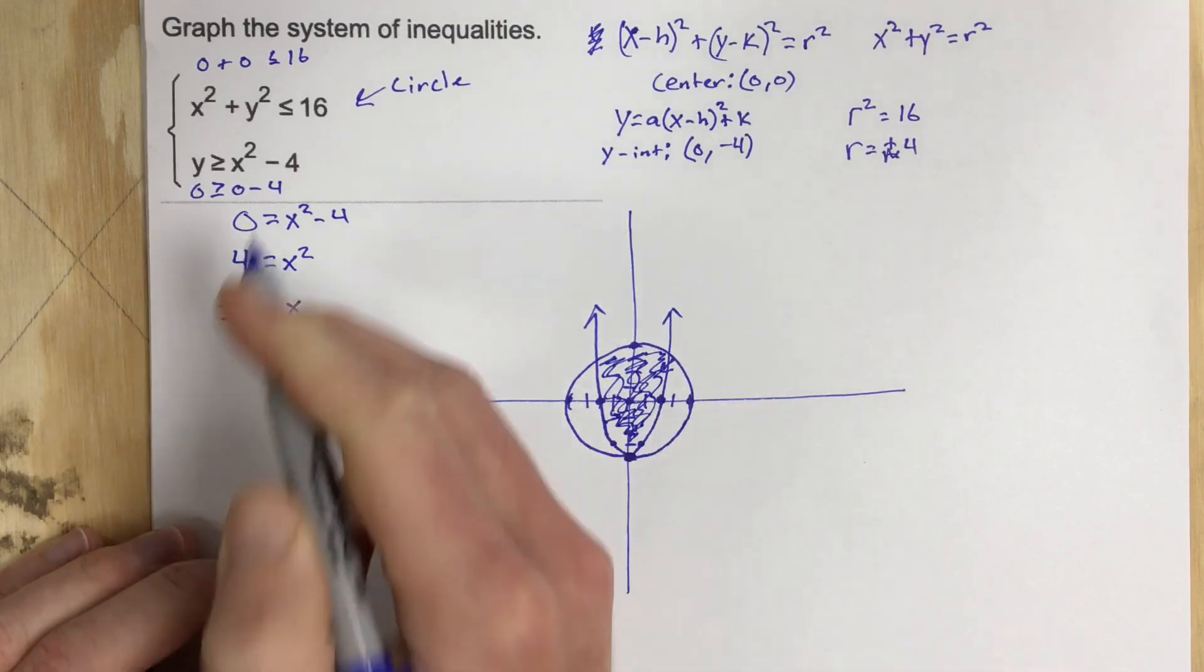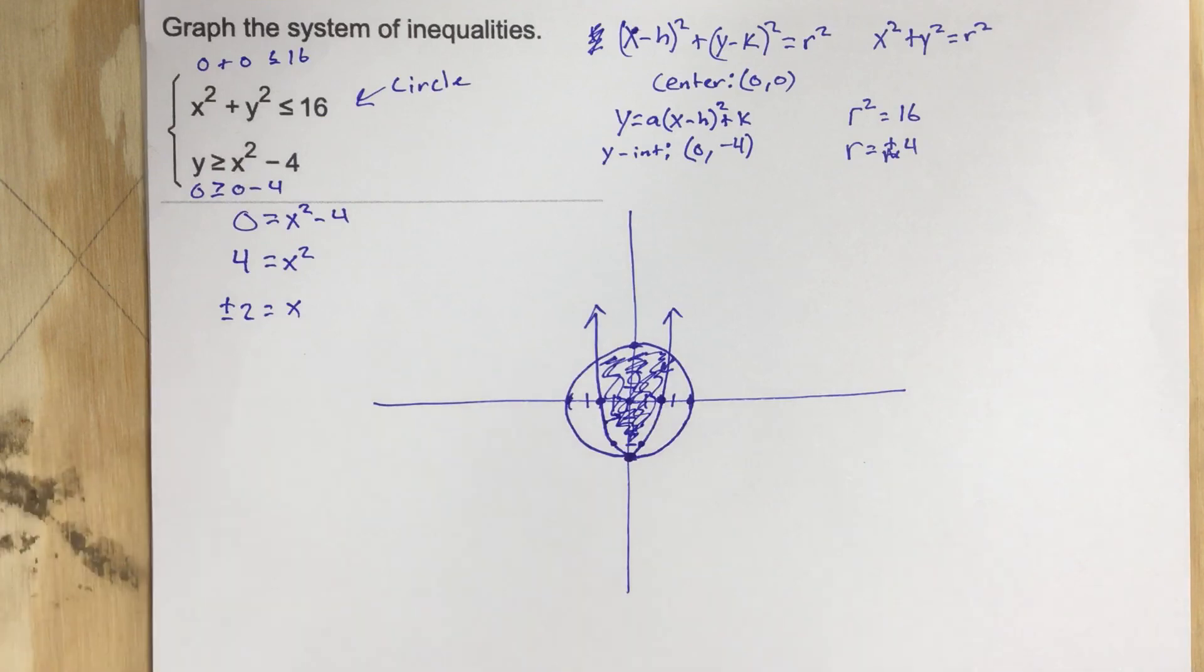So the first step is to be able to identify what type of inequality you're going to graph. And then use the information that you know about those inequalities to graph it and then shade it.